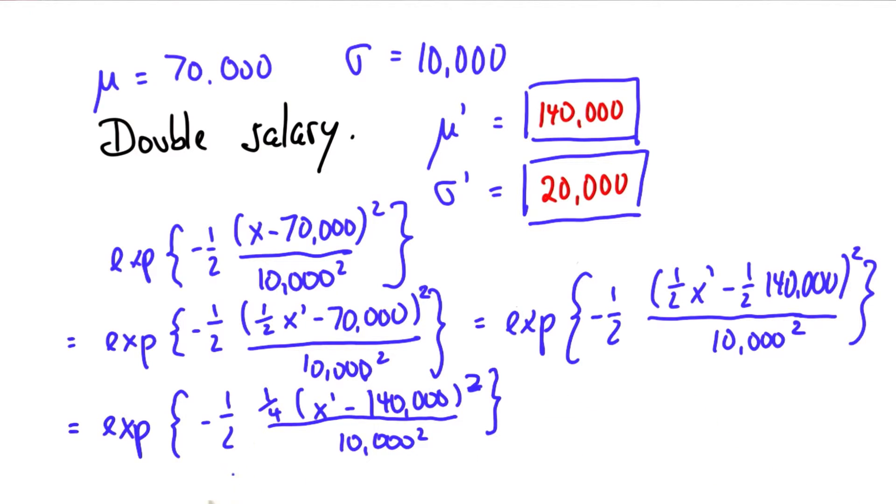Now all I have to do is I have to bring the quarter into the 10,000. So a quarter up here is the same as a 4 down here.